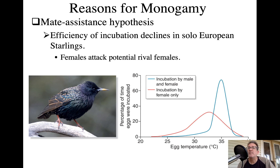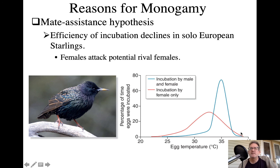This also applies to shared incubation duties. In European starlings, when both males and females incubate, egg temperature is maintained at a fairly constant optimal level. When a female incubates alone, temperature tends to drop on average and varies much more widely. There are critical maximum and minimum temperatures beyond which eggs die or experience developmental problems, so biparental incubation sharing is directly beneficial to reproductive success.